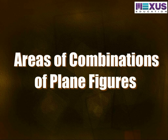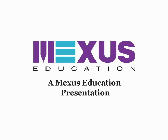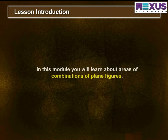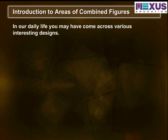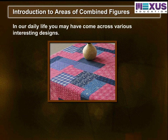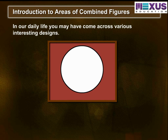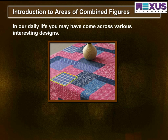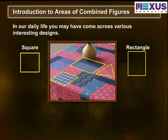In this module, you will learn about Areas of Combinations of Plane Figures. In our daily life, you may have come across various interesting designs, such as Flower Beds, Drain Covers, Window Designs, and Designs on Table Covers, which are formed by combining various basic shapes such as Square, Rectangle, Triangle, or Circle. To find the area of such figures or some parts of figures, we need to calculate the areas of each basic shape separately, then add or subtract areas to find the area of a particular shape in the figure.